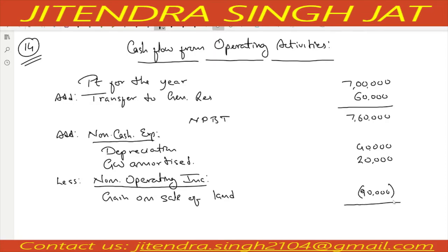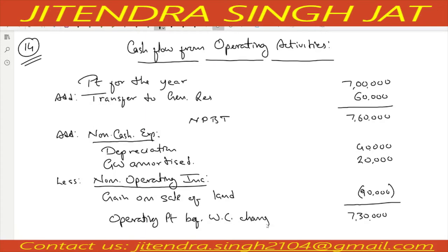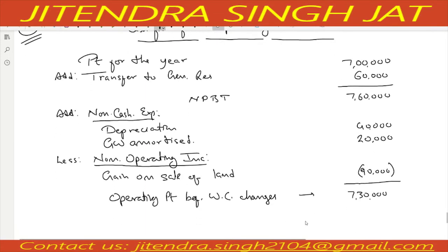So when we calculate: 7,60,000 plus 40,000 plus 20,000 minus 90,000 equals 7,30,000. This 7,30,000 is known as operating profit before working capital changes.